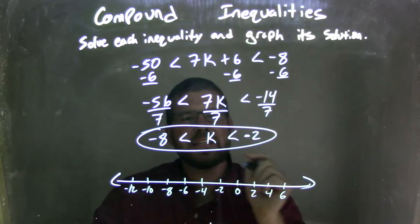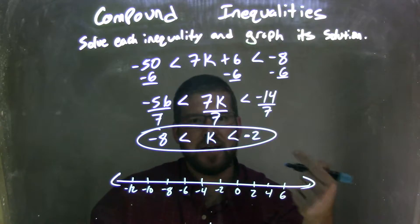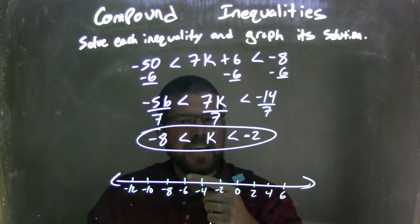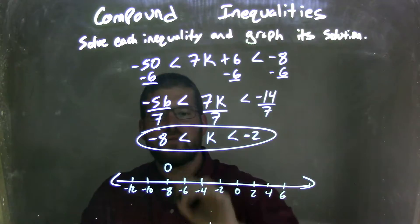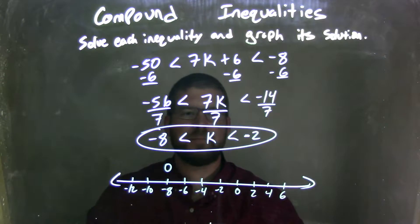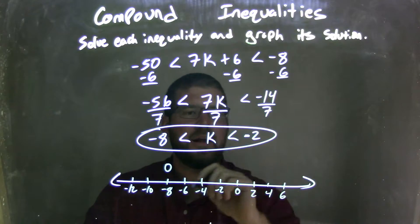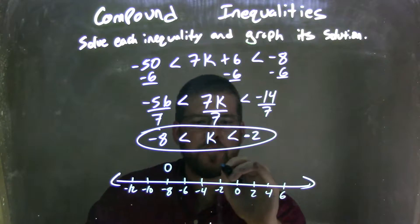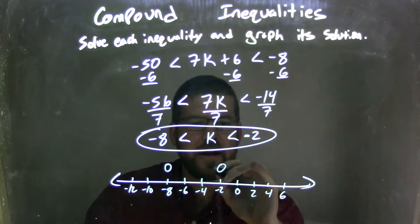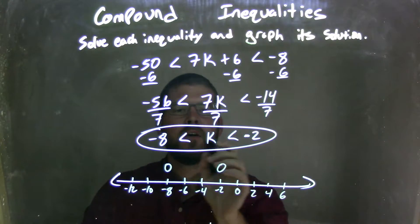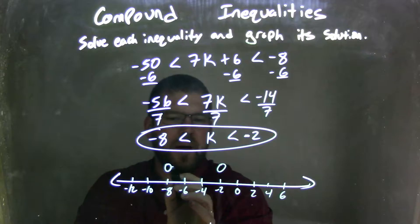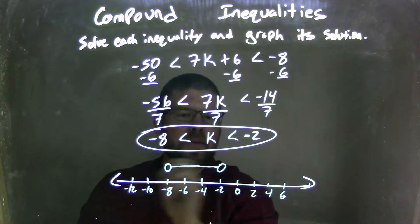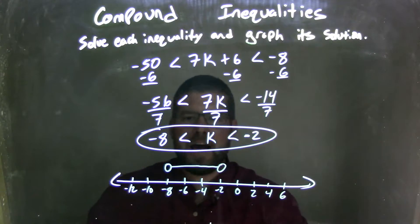Negative 8 is less than k, which is less than negative 2. It can't equal negative 8, so I'm going to put an open circle there at negative 8. And it's not equal to negative 2, so I'm going to open circle it at negative 2. So now k can exist between them — I put my line between there, and there we have it.